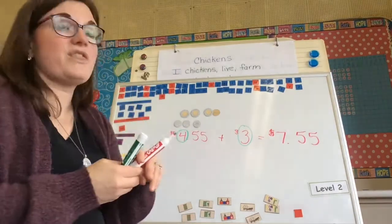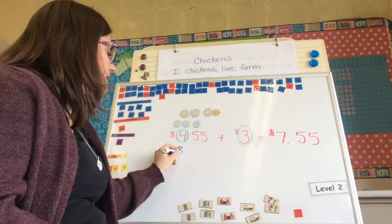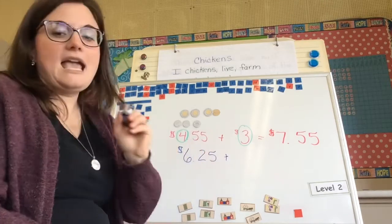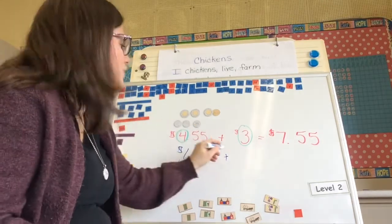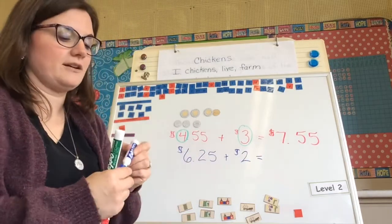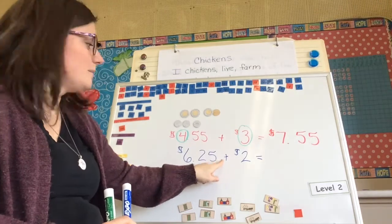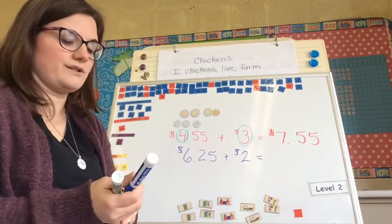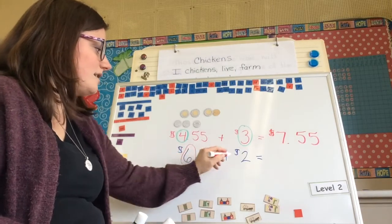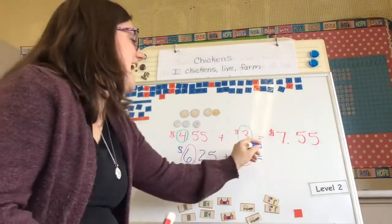Now let's do one without the money. What if I told you I have $6.25 and I was given two more dollars? How much money do I have all together? I have $6.25 plus two more dollars. Let's look at the dollars — $6 plus two more dollars equals $8.